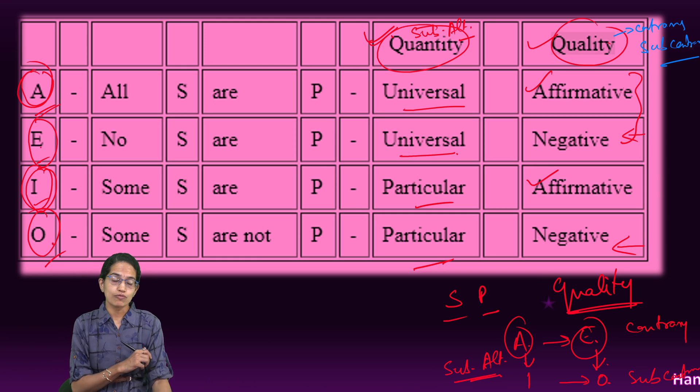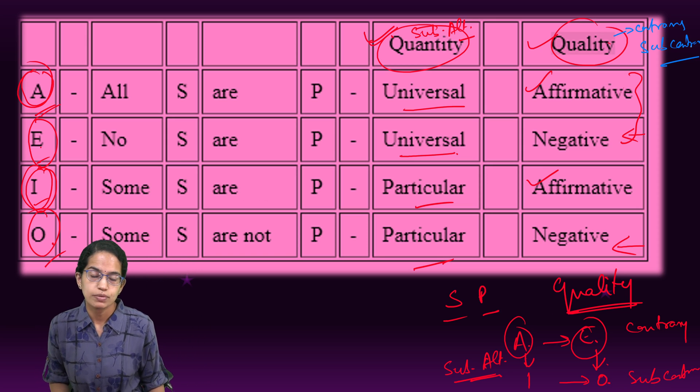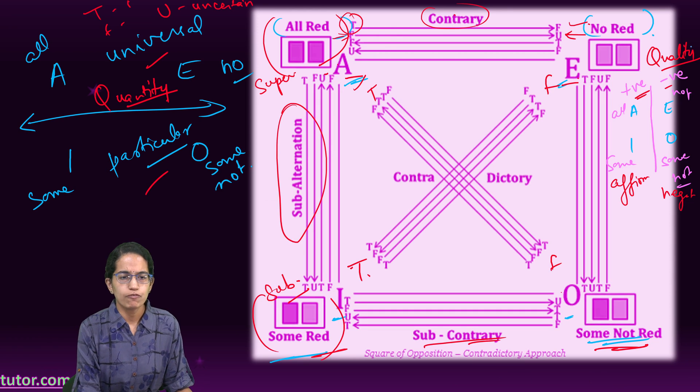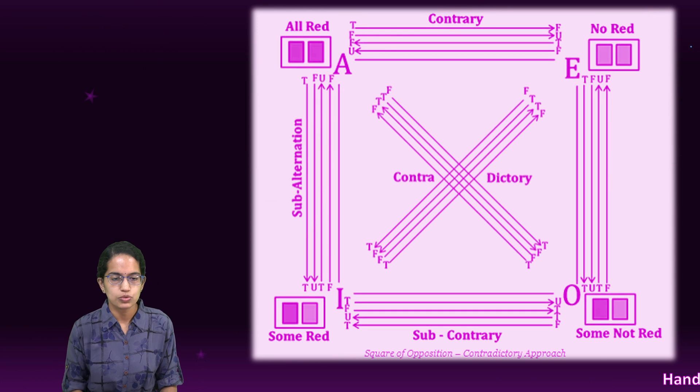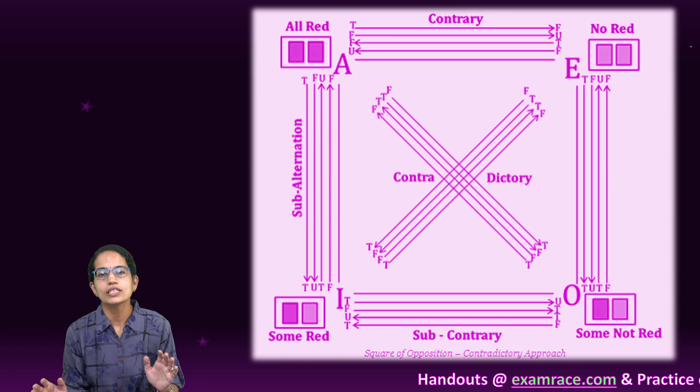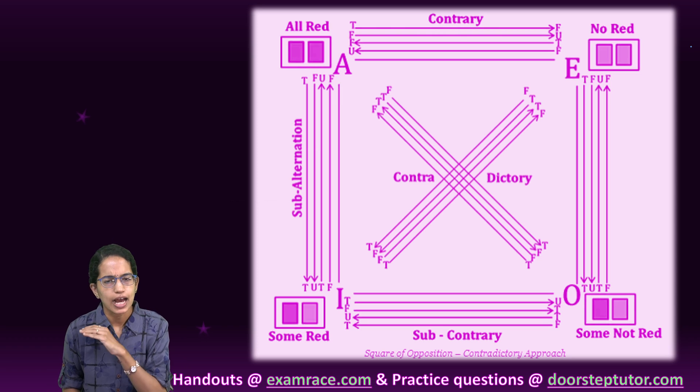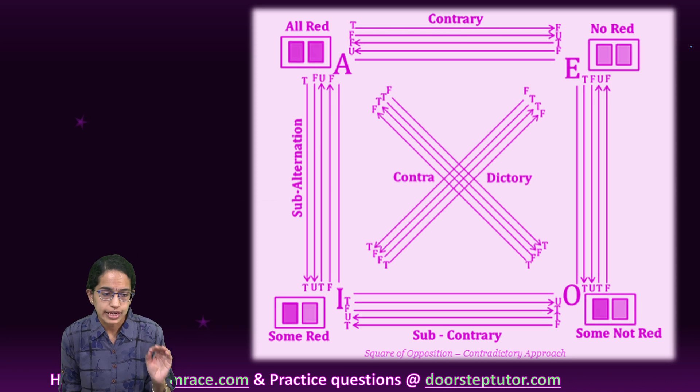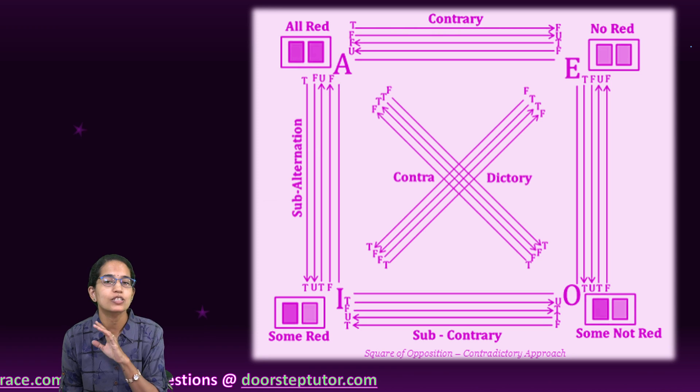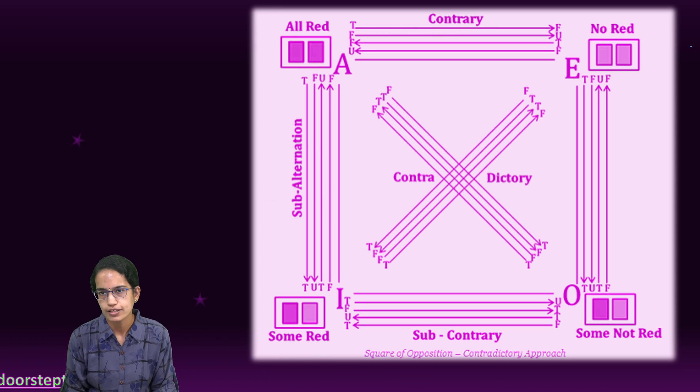And these are some of the common questions which are asked in your NET Paper 1 based on Square of Opposition. Square of Opposition is a very important question. And I usually tell students, if you remember this, just one chart, you are all set with the Square of Opposition problems. Very important concept and highly asked in your NET Paper 1 examination. Very scoring, one mark for sure. Just remember this diagram by heart and it's all done for you.